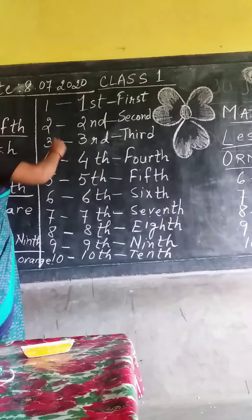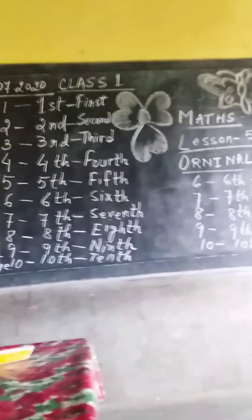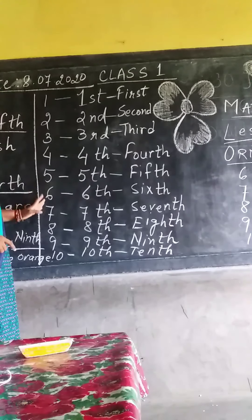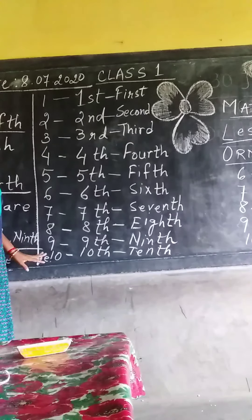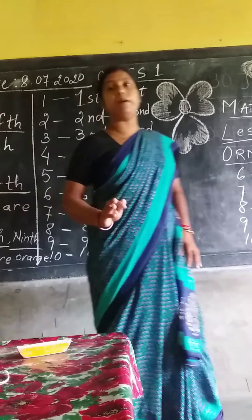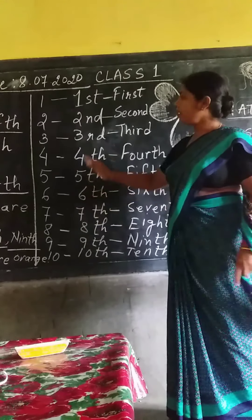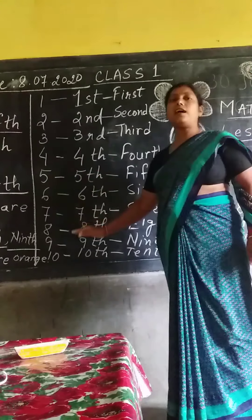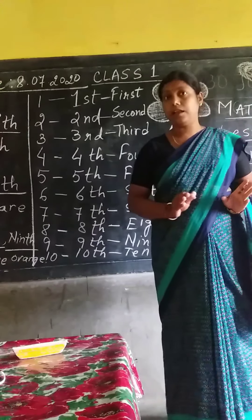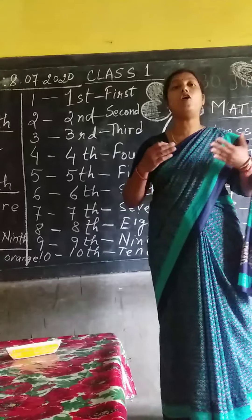Now, once again, let me tell you: 1, 2, 3, 4, 5, 6, 7, 8, 9, 10 — these are all cardinal numbers. What are these numbers? These are all cardinal numbers. They tell us how many.